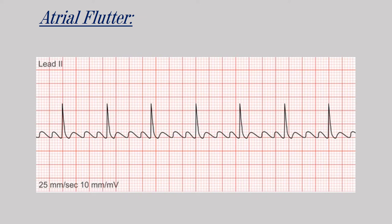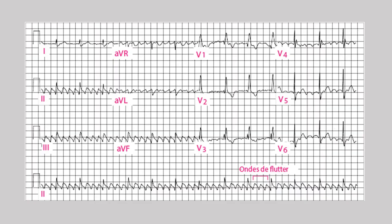Atrial flutter is when an abnormal circuit in the atrium gives the impulse instead of the SA node. It is a regular heartbeat characterized by a sawtooth appearance. We can see the sawtooth appearance clearly and cannot find a normal P wave.